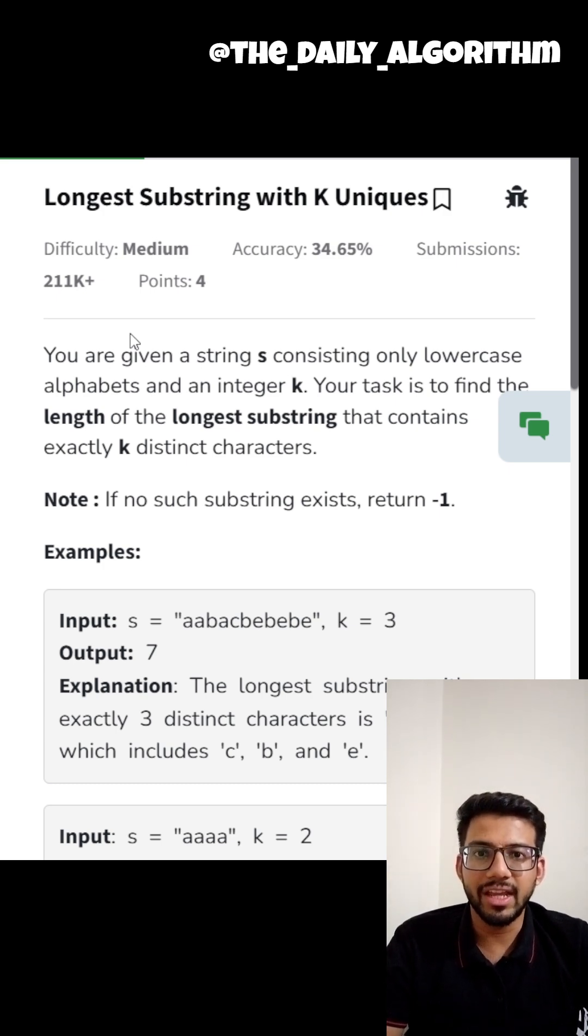Now, log n components can only come in cases we use something like segment tree, binary search or a BST, which I don't think can be used here. So, the solution should have a complexity of O of n. By now, you might have guessed, we are going to use two pointers or sliding window to solve this question.